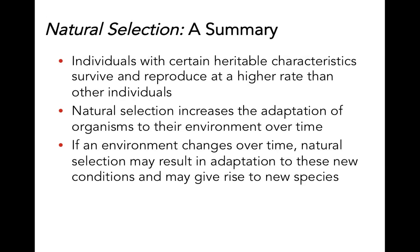Here's what Darwin put forth in On the Origin of Species: individuals with heritable characteristics that are favorable will survive and reproduce at a higher rate than those who do not have those heritable characteristics. Natural selection is going to increase the adaptation of organisms to their environment over time because they are better suited to their environment and more likely to survive and reproduce. So if an environment changes over time, the direction of natural selection may change, resulting in adaptation to new conditions that may give rise to new species.